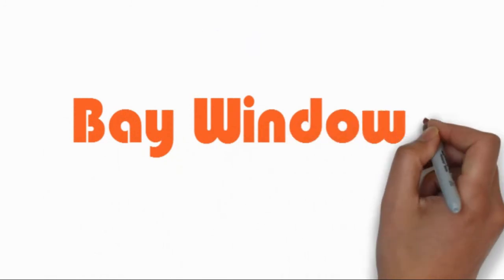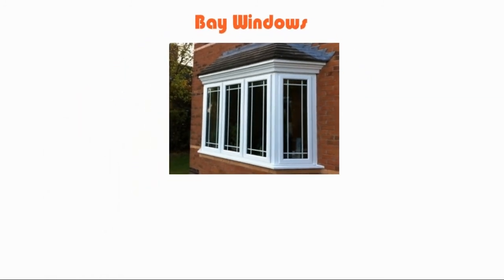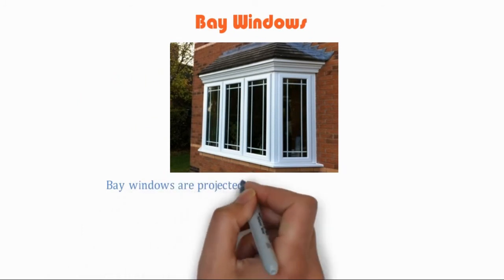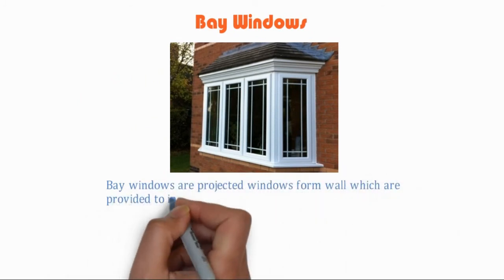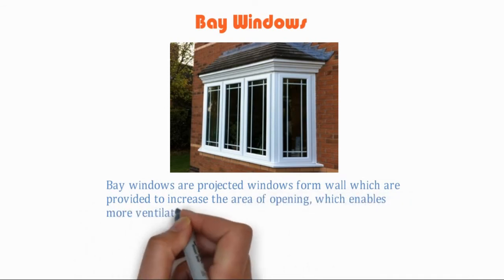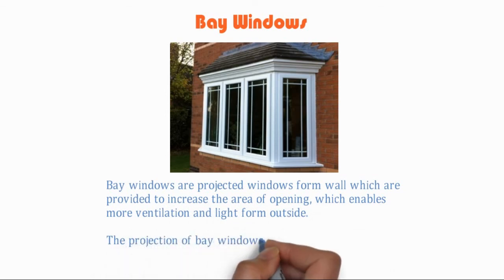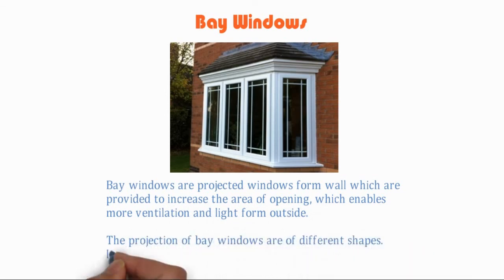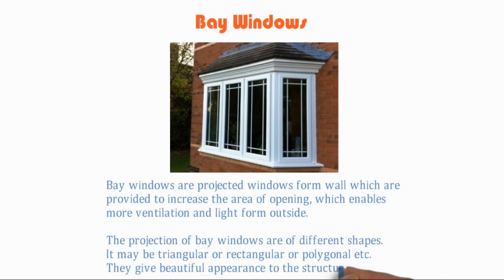Bay windows are projected windows from the wall, which are provided to increase the area of opening, enabling more ventilation and light from outside. The projection of bay windows can be of different shapes — it may be triangular, rectangular, or polygonal. They give a beautiful appearance to the structure.